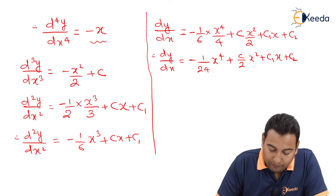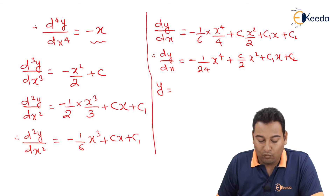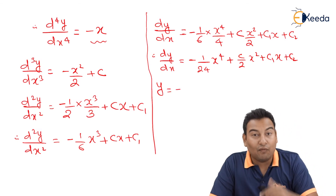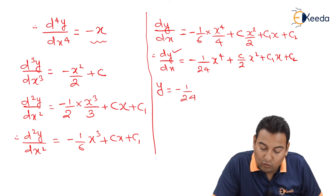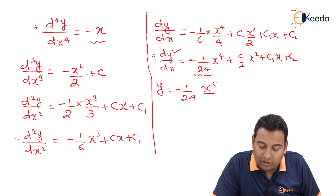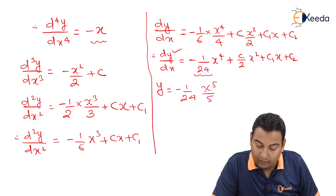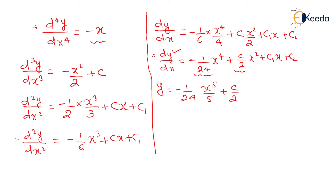Let's integrate one more time. Integrating once more finally gives y. Minus 1/24 is constant, x⁴ integrates to x⁵/5; C/2 is constant, x² integrates to x³/3; C1 is constant, x integrates to x²/2; C2 is constant, integrates to x; plus one more constant of integration C3.